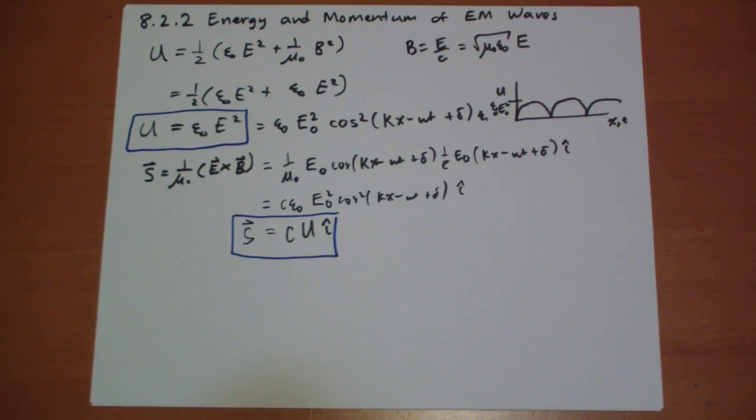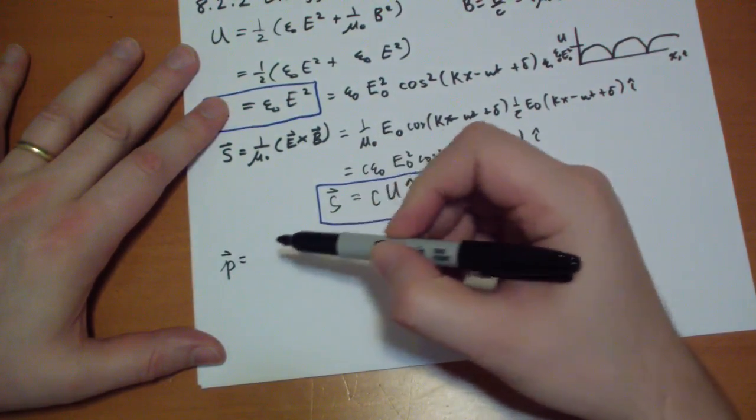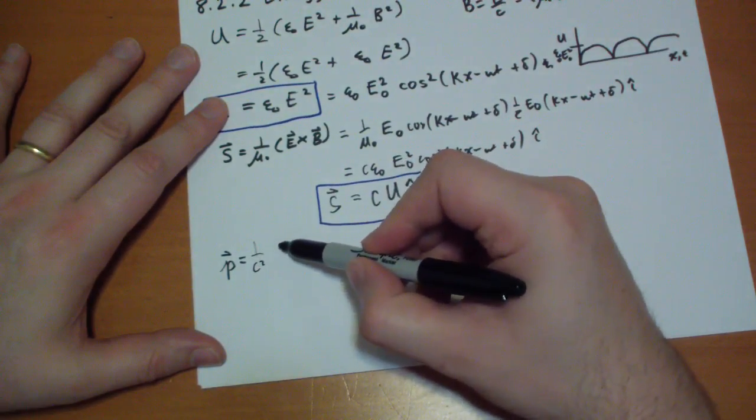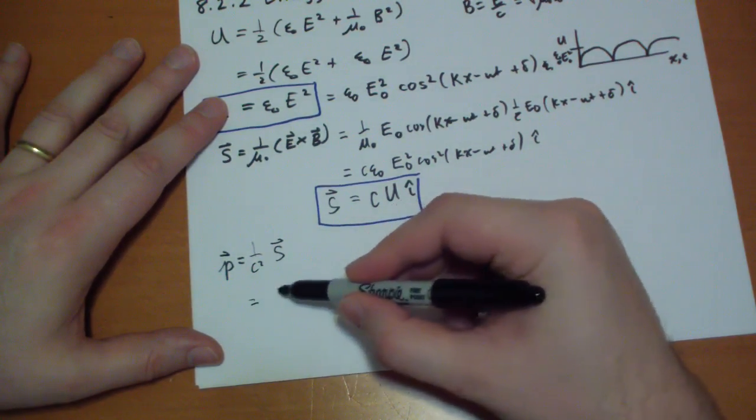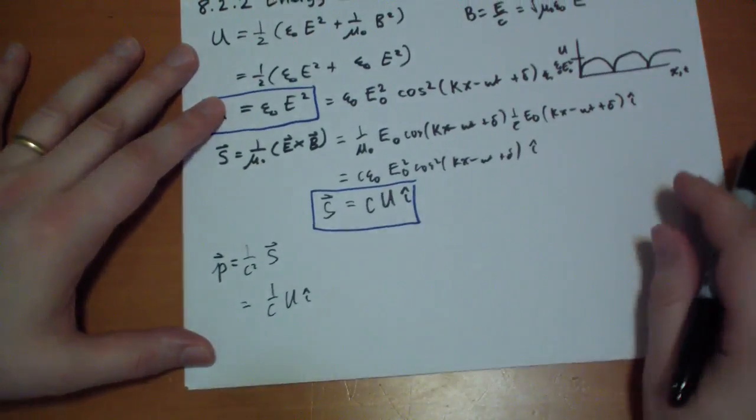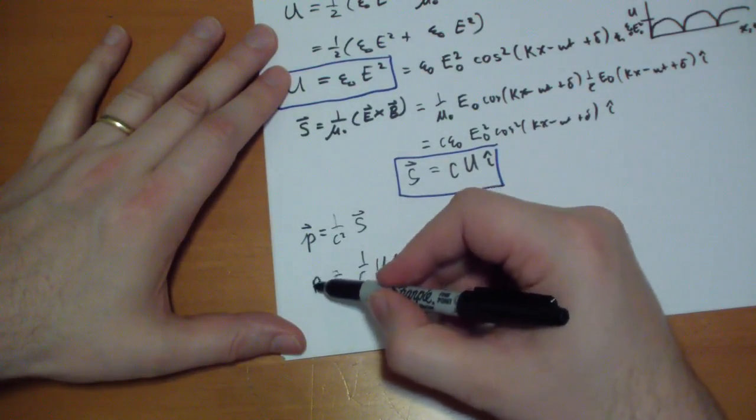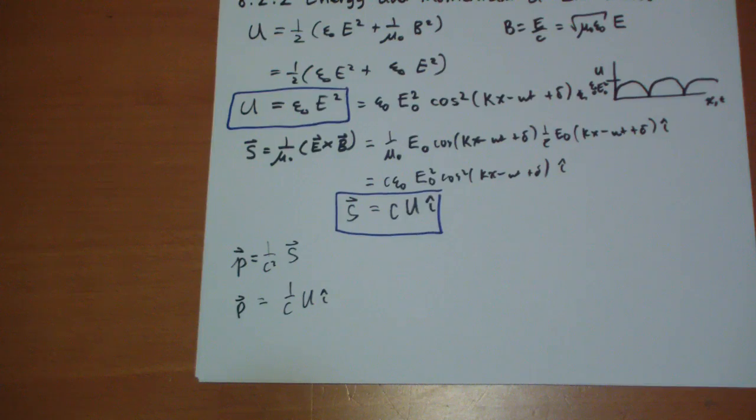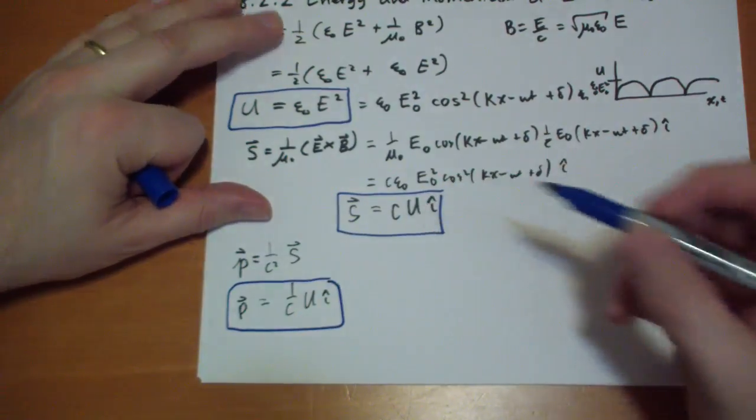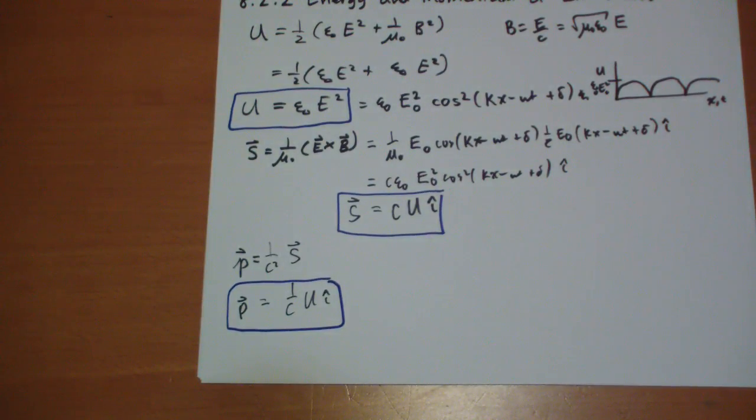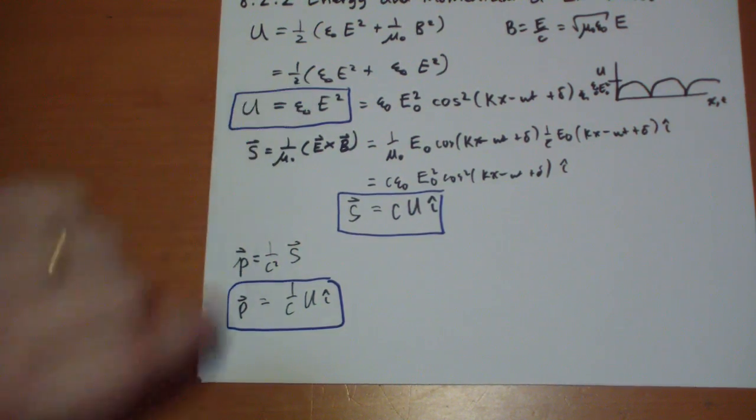So, the next interesting thing is momentum. Remember momentum we discovered was, p vector was just 1 over c squared times the S vector, we just calculated the S vector. So, that's going to be 1 over c u i-hat. That's the momentum of the wave. Once again, the momentum of the wave has a maximum and a minimum of zero, and notice the momentum never points backwards, because we're taking the squares of the fields here with the u.